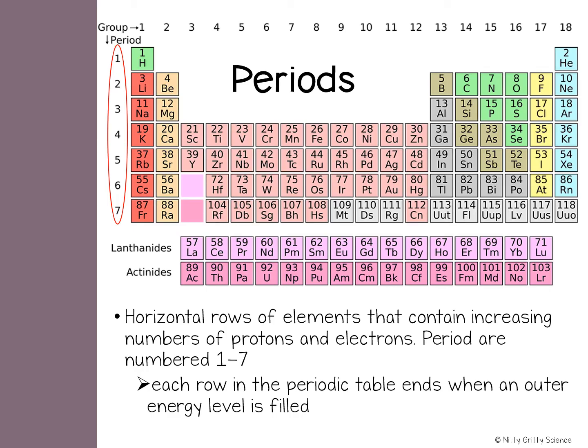Remember, the outer energy levels can hold eight electrons, unless it is hydrogen or helium. So everything from helium, neon, argon, krypton, xenon - all of those have their outer energy level filled. Notice the colored regions on the periodic table.